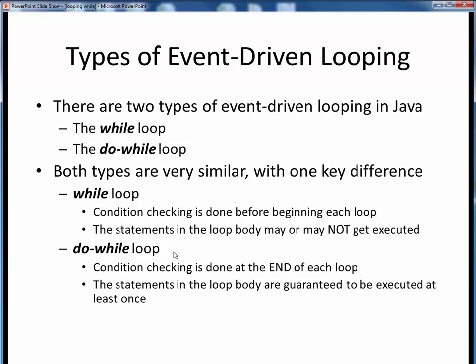By contrast, in do-while loops, the condition is located and is checked at the end of the loop. This means that we have to traverse the loop statements at least one time to get to that condition, and so the loop body is guaranteed to be executed at least one time. Let's take a look and see what this means visually.